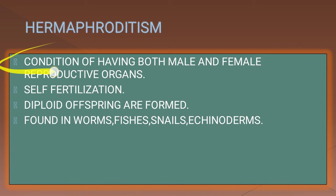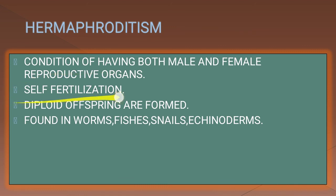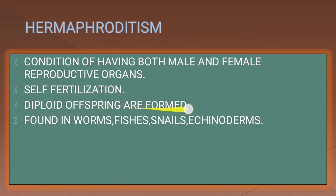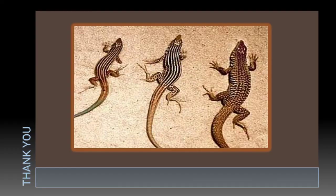Hermaphroditism is the condition of having both male and female reproductive organs. These organisms undergo self-fertilization, and diploid offspring are formed. It is found in worms, fishes, snails, and echinoderms. Here we come to the end of this video. Thank you for watching.